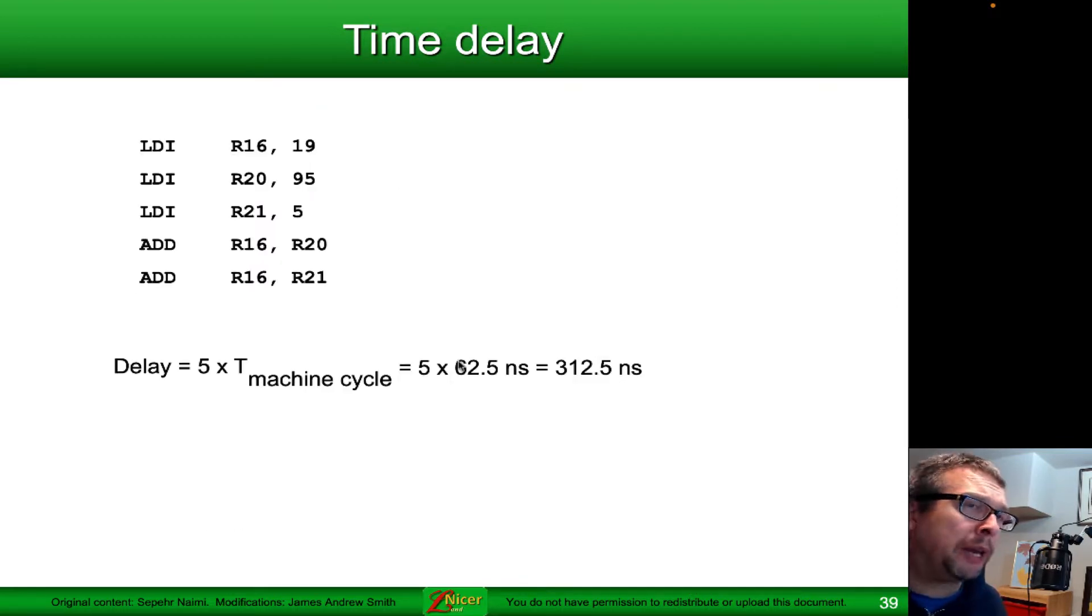When we execute instructions on the machine itself, each instruction takes a fixed amount of time. Typically, we're talking about one clock cycle per instruction. In this particular case, we have three load immediates and two adds. Each one of these takes one machine cycle, one iteration of a 62.5 nanosecond period. Because we have five operations that each take one cycle, these five operations take 312.5 nanoseconds.